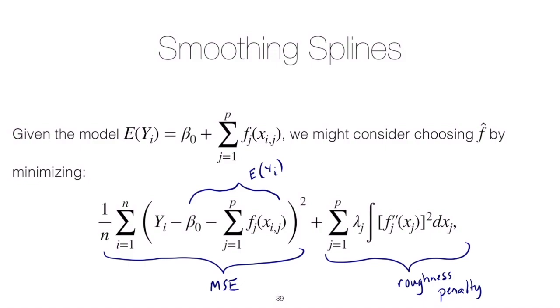That term is just tracking the smoothness of the fits, but now it's the smoothness of the fits for j from 1 through p, not just for one single value. Also notice that there are j lambdas, so you can choose or use some algorithm to help you choose the smoothness terms for each one of the fits. You can make some fits more rough and some fits more smooth depending on what you choose for lambda j.